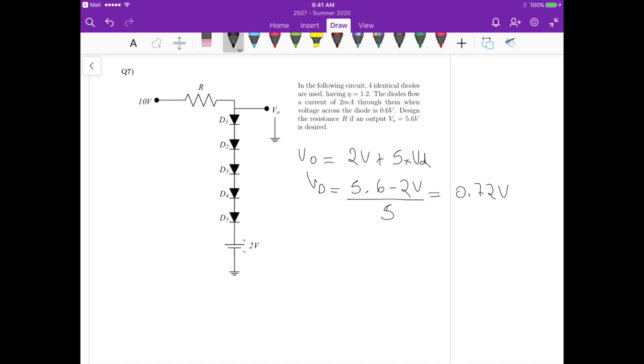Now what's the value of the current that gives us this? First we have to calculate the saturation current. The saturation current is the current I divided by exponential of Vd divided by the ideality factor times the thermal voltage. This equals 2 mA divided by exponential of 0.6 divided by 1.2 times 25 millivolts for thermal voltage. This gives us a saturation current of 4.12 picoampere.